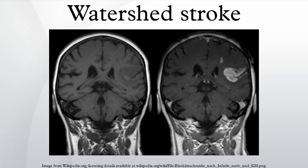In a medical context, the term refers to those areas of the brain that receive dual blood supply from the branching ends of two large arteries. These events are localized to two primary regions. Cortical watershed strokes, or outer brain infarcts, are located between the cortical territories of the anterior cerebral artery, middle cerebral artery, and posterior cerebral artery.